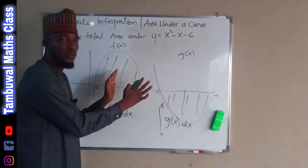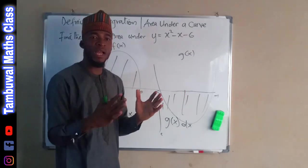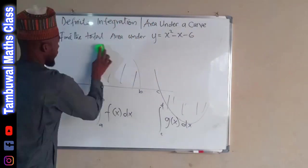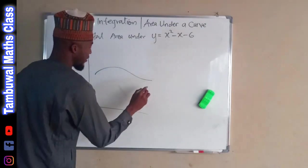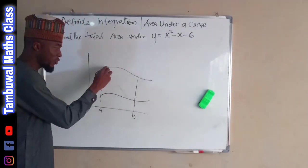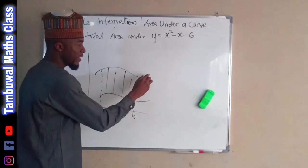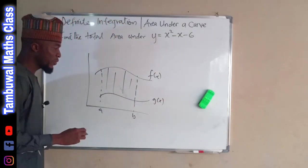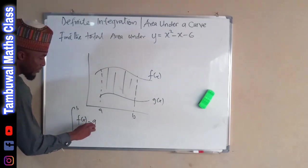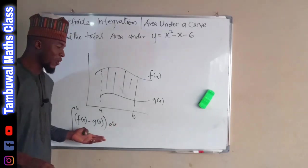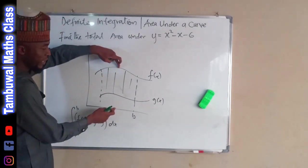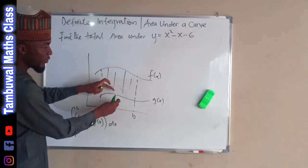Suppose we want to find the total area of these two curves. We are going to find the area of each one and add them together, but we have to take the absolute value because we may end up getting zero. Now, suppose we have two graphs and this point is a while this point is b, and we are asked to find the area between the two curves. Assuming this curve is f of x and this curve is g of x, the area is going to be the integral from a to b of f of x minus g of x with respect to x. It is like finding the total area from the upper curve down to the x-axis and subtracting the area of g of x to get the remaining area.